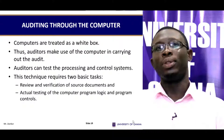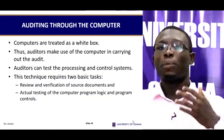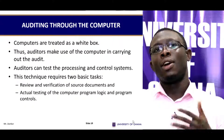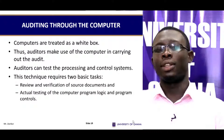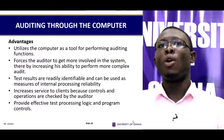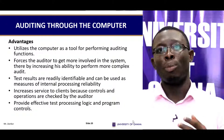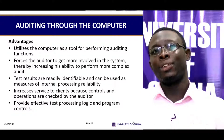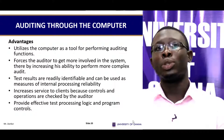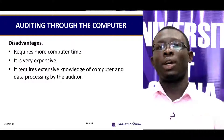In auditing through the computer, computers are treated as a white box — auditors make use of the computer in carrying out the audit and can test the processing and control systems. This technique requires two basic tasks: review and verification of source documents, and actual testing of the computer programme logic and programme controls. Advantages include: it utilises the computer as a tool for performing auditing functions; it forces the auditor to get more involved in the system, increasing the ability to perform more complex audits; test results are readily identifiable as measures of internal processing reliability; and it provides effective testing of processing logic and programme controls.